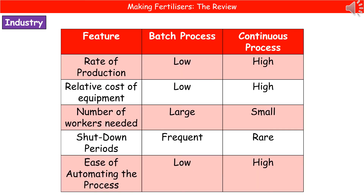You need to be able to select whether something would be made through batch or continuous process and justify why. This table summarizes the key features of both. The rate of production in batch process is quite low, whereas in continuous process it is high. The cost of equipment in batch process is low, while in continuous process it is high.